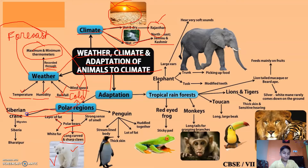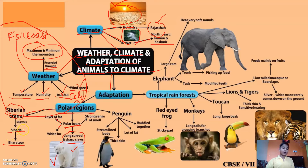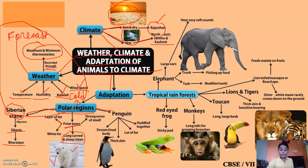Another polar region example is the Siberian crane, which is found in Siberia or Bharatpur. The Siberian crane migrates and is found in Siberia and Bharatpur. In Hindi we call it 'saras' — Siberian saras. Penguin is also a polar region example.